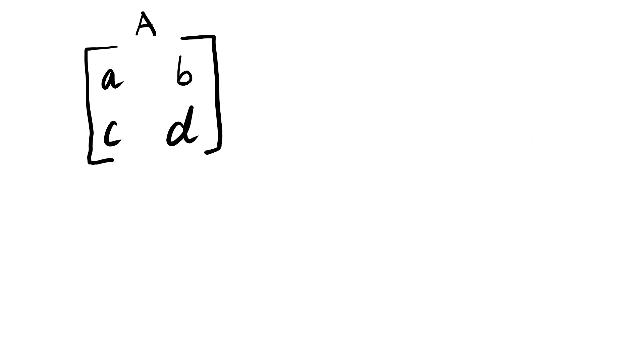This is what we call a 2 by 2 matrix. Why do we say it's a 2 by 2? You can see that we have two elements on the row and also two elements on the column. So that's why we say it's a 2 by 2 matrix.